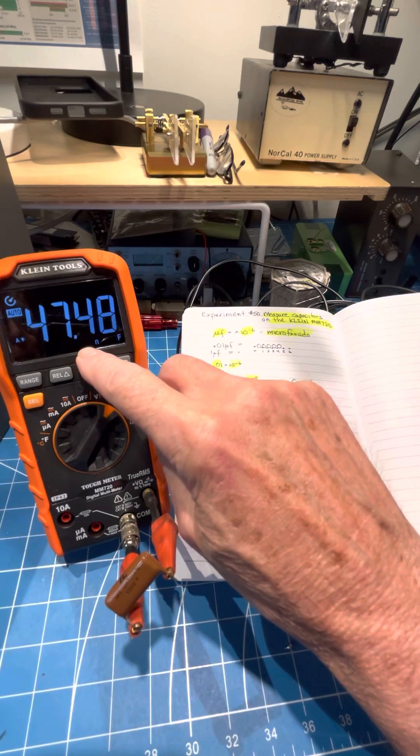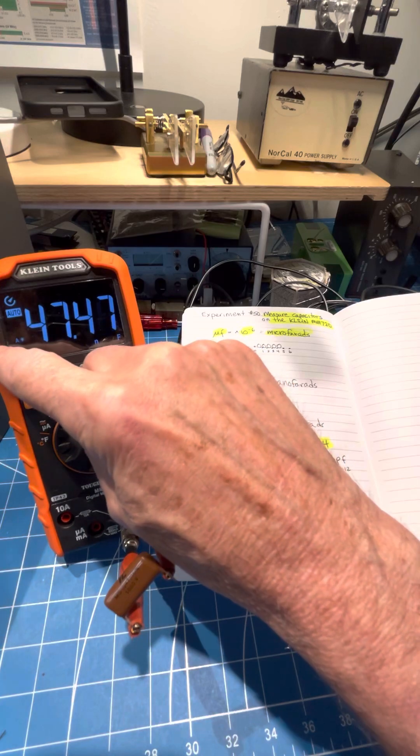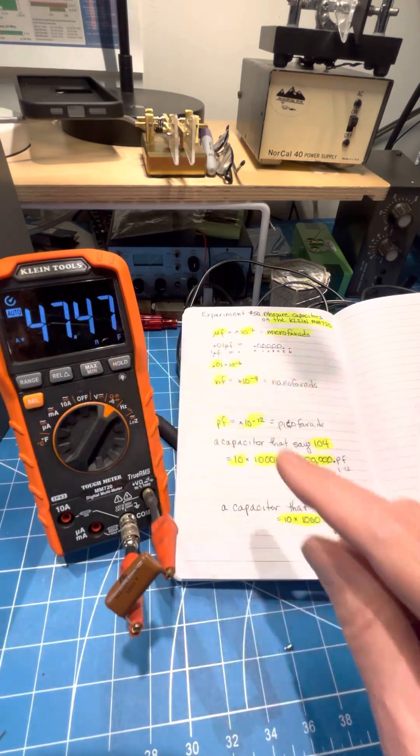But you've got to get used to switching between microfarad and nanofarad. So this is minus 9, minus 8, minus 7, minus 6. It'd be 0.047. So that's what you get.